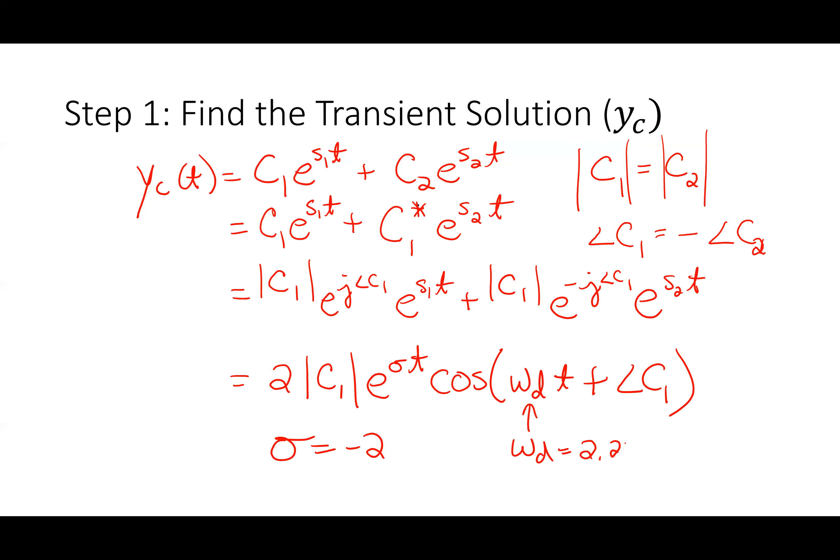σ must always be negative — if it were positive the oscillation would grow, implying energy stored in the system heads toward infinity, which would blow up the capacitor or inductor. ω_d must also be positive. So I need to solve for the magnitude and angle of c₁, which are my two unknowns.